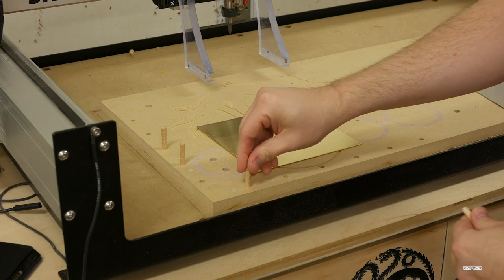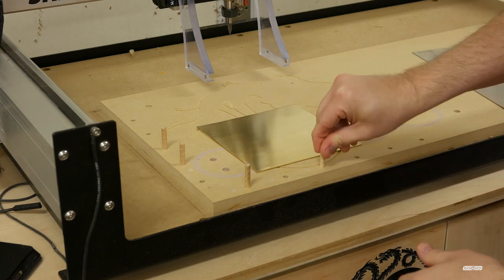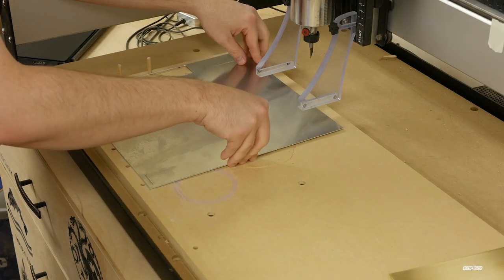The first ruler I'm going to make is out of aluminum. I line this sheet on the spoil board using my removable index pins and double-sided tape.